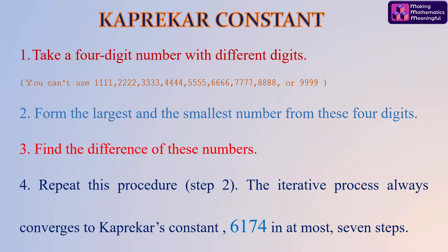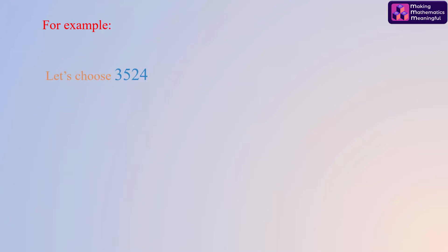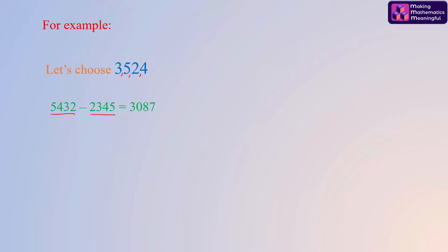Let me consider one example. Let's choose the number 3524. It has four digits: 3, 5, 2, and 4. One can easily observe that 5432 is the largest number which can be formed and 2345 is the smallest number which can be formed. Subtract them.